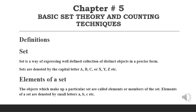The next one is elements of a set. In the set, there are different objects. The objects which make up a particular set are called the elements or members of the set. These elements are shown using small letters, such as a, b, c.